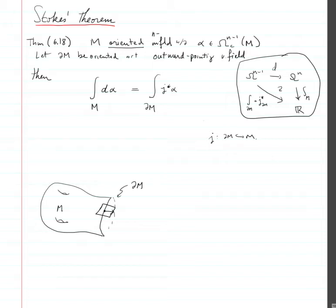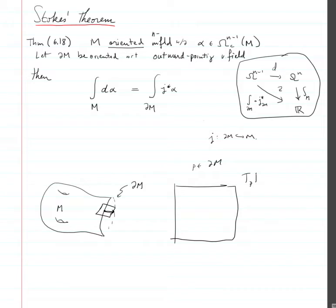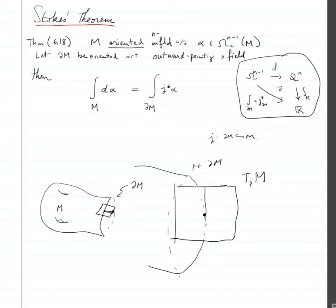The outward pointing vectors — so let me zoom in. Suppose we have a point p inside the boundary of m, and we look at the tangent of m. Here's the boundary; here's m — I'm zooming into this point. The tangent space has a codimension-1 subspace, which is the tangent to the boundary.